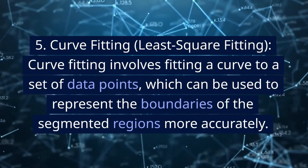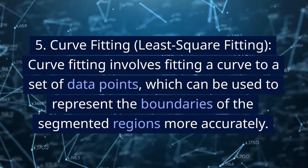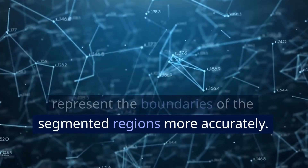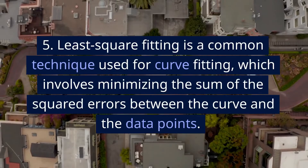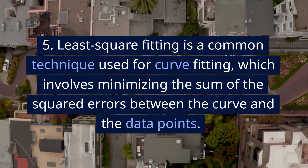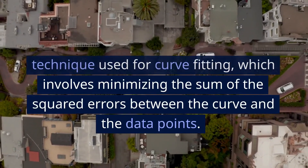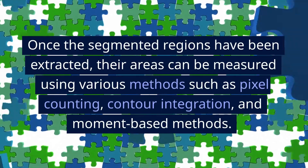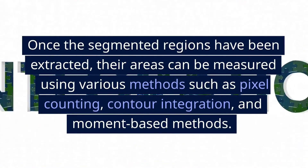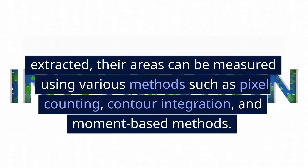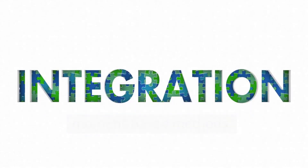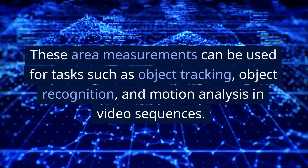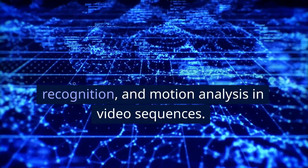5. Curve fitting and least squares fitting — curve fitting involves fitting a curve to a set of data points to represent the boundaries of segmented regions more accurately. Least squares fitting is a common technique that minimizes the sum of squared errors between the curve and the data points. Once segmented regions have been extracted, their areas can be measured using methods such as pixel counting, contour integration, and moment-based methods. These measurements are used for tasks such as object tracking, object recognition, and motion analysis in video sequences.